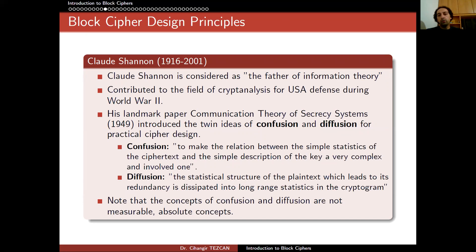So confusion means to make the relation between the simple statistics of the ciphertext and the simple description of the key a very complex and involved one. And diffusion is defined as the statistical structure of the plaintext which leads to its redundancy. This is dissipated into long-range statistics in the cryptogram. Note that these concepts, confusion and diffusion, are not measurable absolute concepts. So these definitions are somewhat abstract.